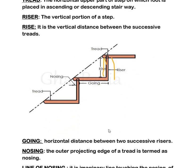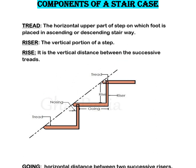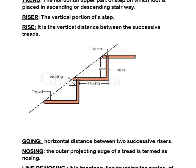The next component part is going. Going is the horizontal distance between two successive risers. To recap: the horizontal upper part of a step on which the foot is placed is thread, the vertical portion of a step is riser, and the horizontal distance between two successive risers is going.